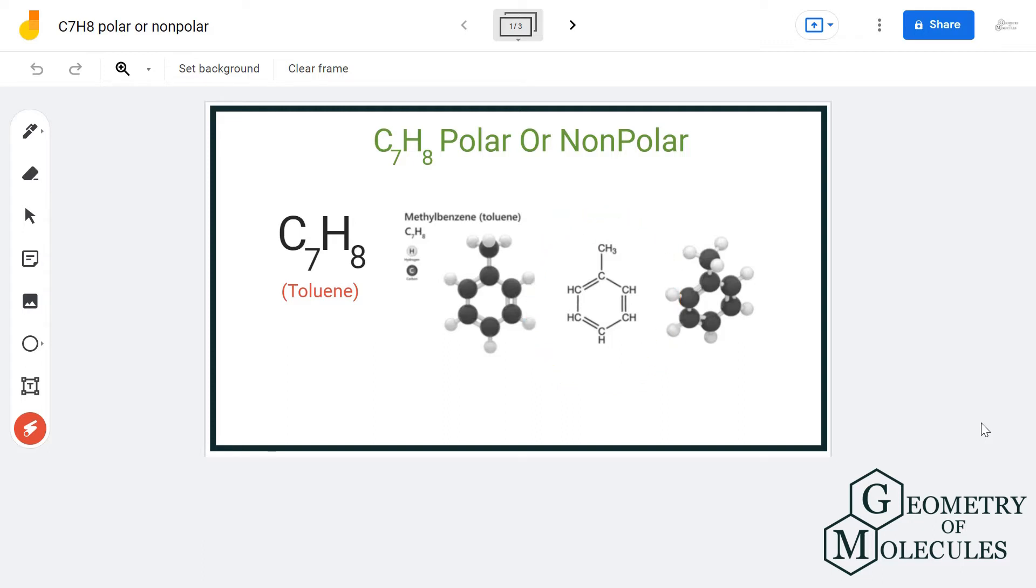It consists of seven carbon atoms and eight hydrogen atoms. If you know the difference of electronegativities for carbon and hydrogen, it is quite less.